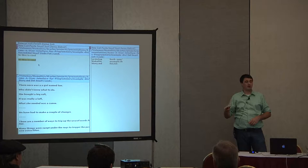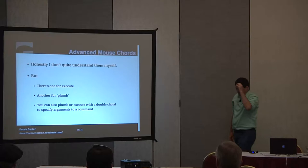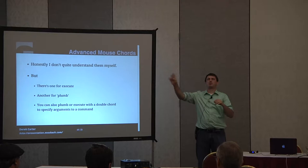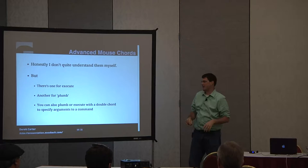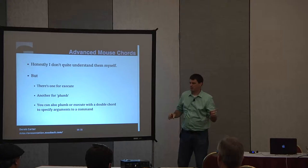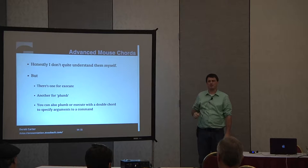Advanced mouse cording — honestly, I don't quite understand it myself. All I know is that it does really cool stuff. There's a two-plus-one swipe three that does radical magical stuff. There's one that does execute wherever it happens to be, and another that does plumb whatever it happens to be. You can plumb and/or execute with options in a different way, which I still kind of don't understand myself. I'm hoping to learn it soon so I can explain it.